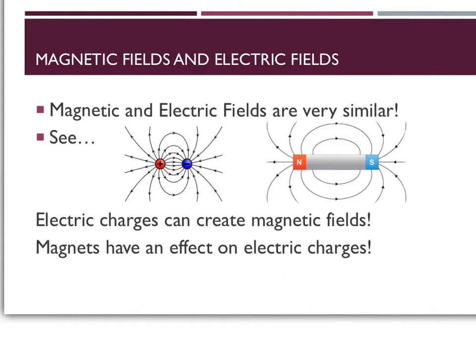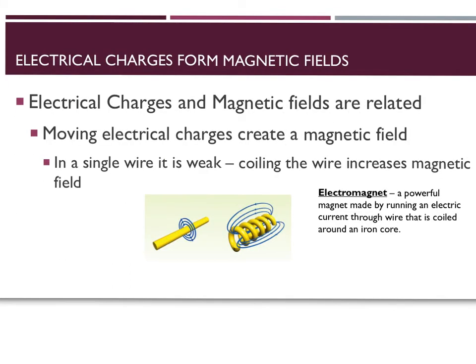Just like magnets, electrical charges also have an area around them where they can affect things or exert force. As you can see in the two illustrations, magnetic fields and electric fields look very similar, and they are related — they have a very intimate relationship. Electric charges can make magnetic fields and, vice versa, magnets have an effect on electrical charges.